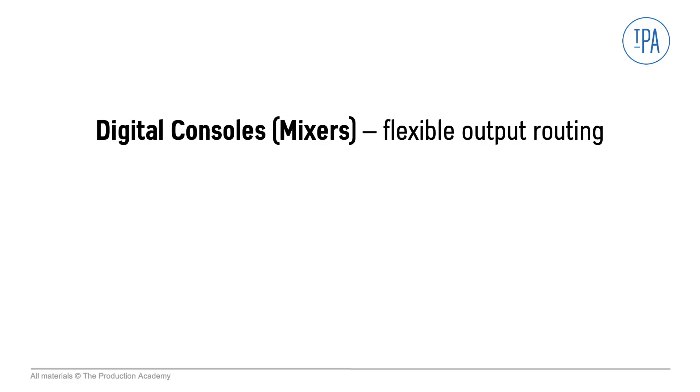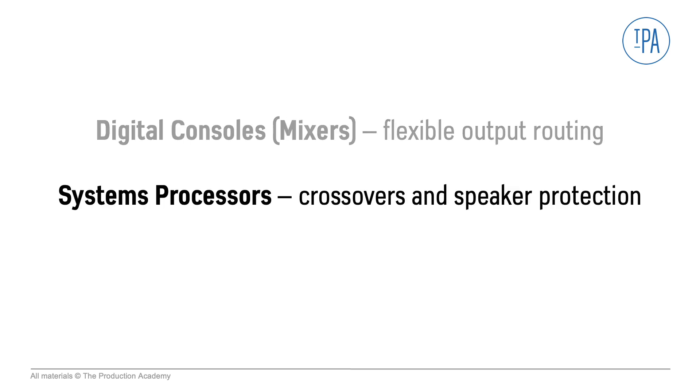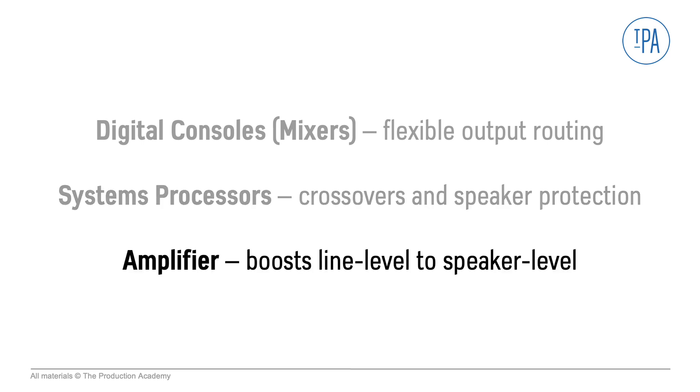We've now seen how a signal gets through the console from the input to the output with many options for processing and routing along the way. Now let's see where the signals go after the console. First we see how digital consoles have flexible output routing, then we look at systems processors which have crossovers and speaker protection, and we see how an amplifier boosts line level signal to speaker level. Analog consoles have a dedicated physical connector for each output.